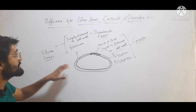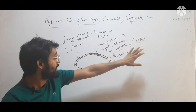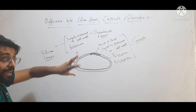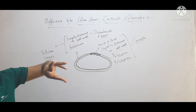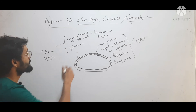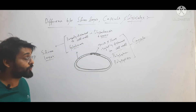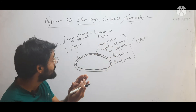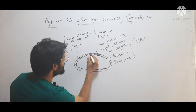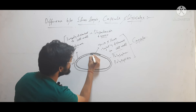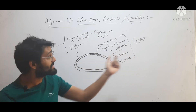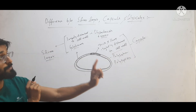So this is the difference between slime layer and capsule. If the outer covering outside the cell wall is loosely attached and gelatinous in nature, made up of polysaccharide and water, then it is called slime layer. If it is thick and hard and tightly attached to the cell wall, made up of polysaccharide and polypeptides, then it is called capsule.